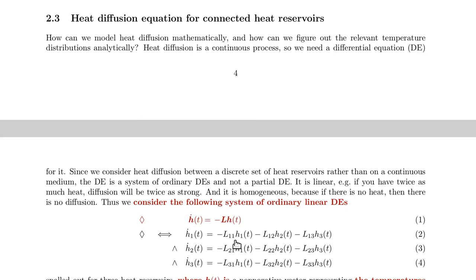So L11 should be L21 plus L31 but with a negative sign, because these guys gain the heat and this one loses the heat. So because it's a gain, these L21 and L31 should be negative. Actually, all components with mixed indices should be negative, while those on the diagonal should be positive.